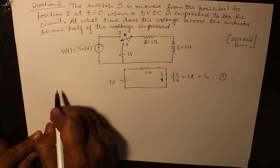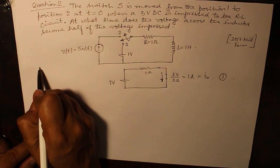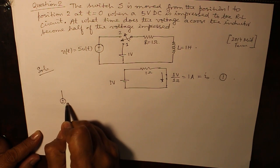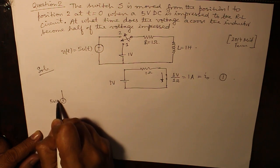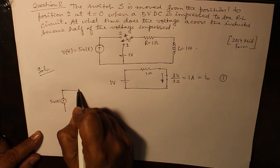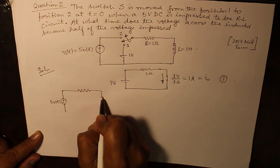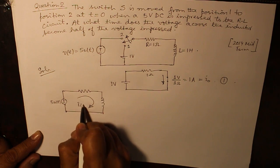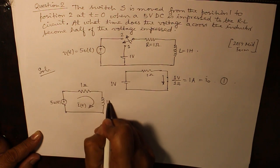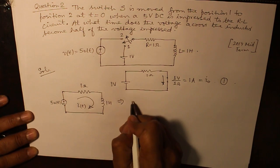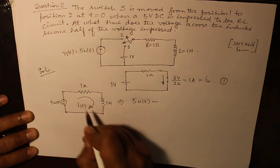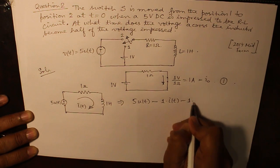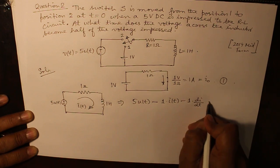Now the next circuit with 5UT being impressed and switch at position 2 becomes this. Let the current be IT. Applying KVL in this: 5UT minus 1 into IT minus 1 DI by DT is equal to 0.